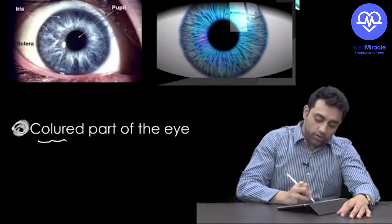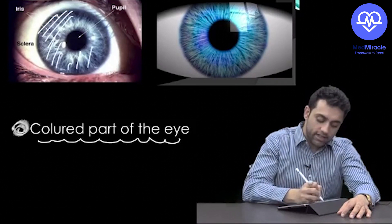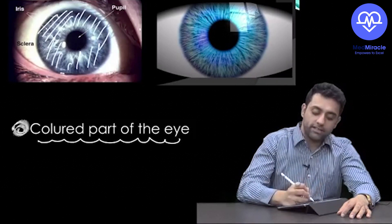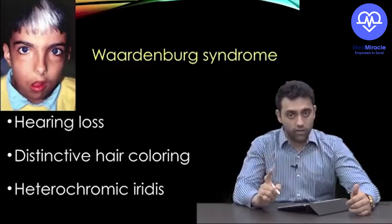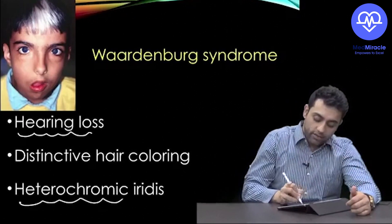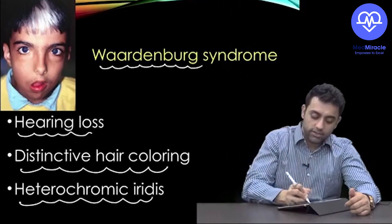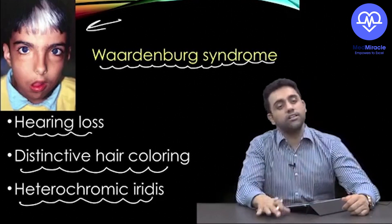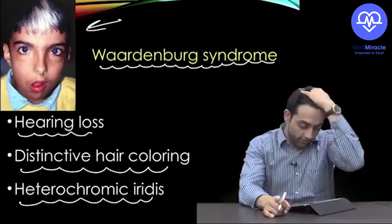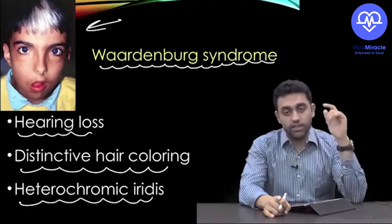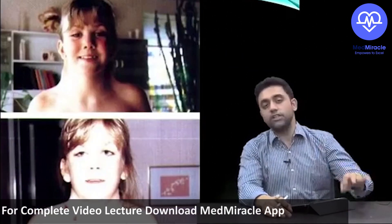The iris is the colored part of the eye. If a baby has hearing loss with heterochromia iridis and distinctive hair coloring — a white forelock or patch — you should think of Waardenburg Syndrome. The three key features are: heterochromia iridis, distinctive hair coloring, and hearing loss.